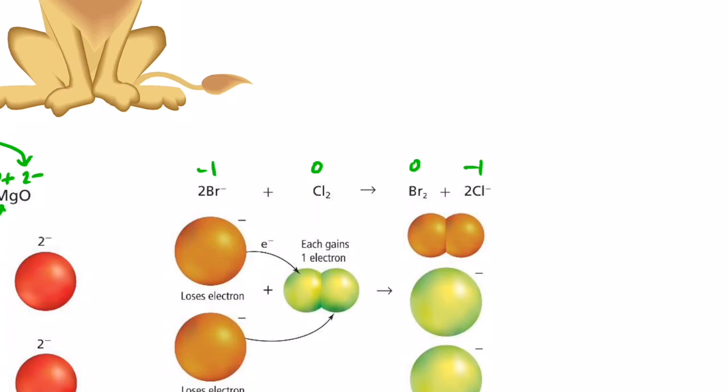Okay? So, in order for that to happen, what happened? Well, let's see. Br went from negative one to zero. How do you go from negative one to zero? That's right, you have to lose electrons. So, we say the Br negatives, the bromide ions, were oxidized. Chlorine, Cl2, went from zero to negative one. Its oxidation number was reduced. So, we say that the chlorine was reduced.